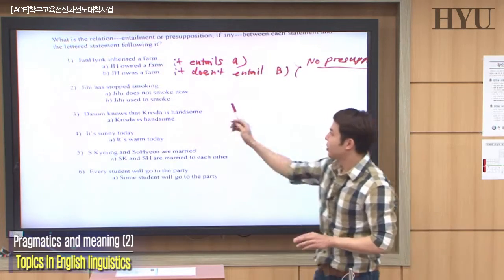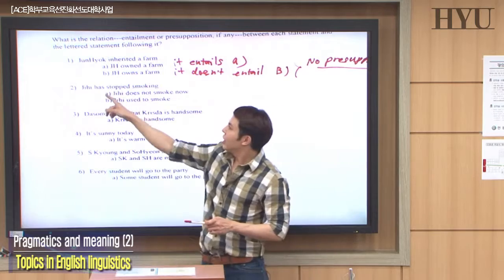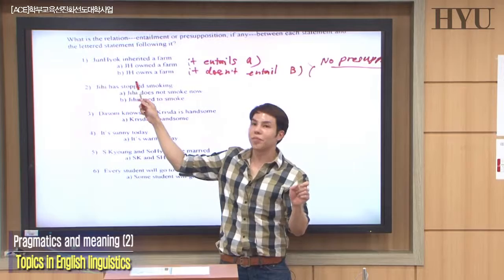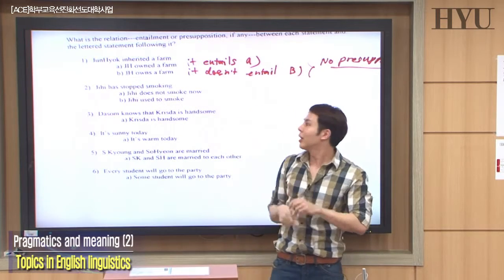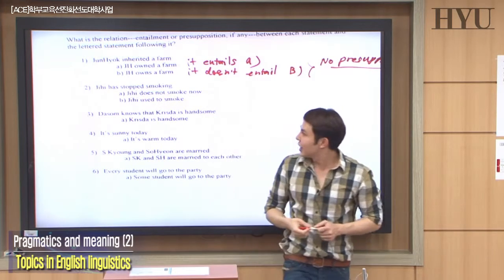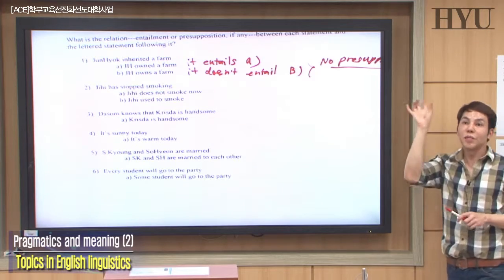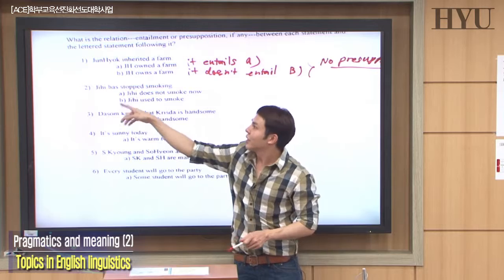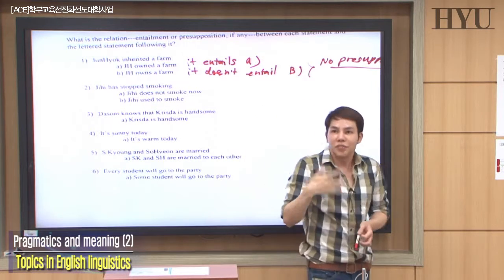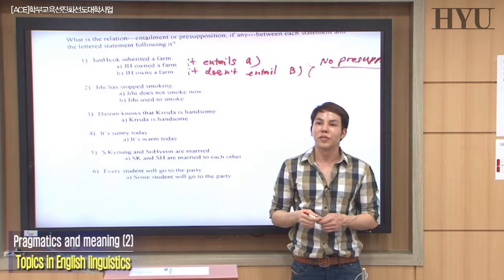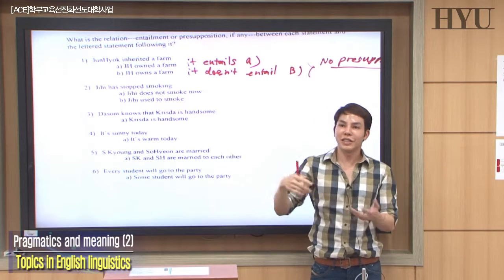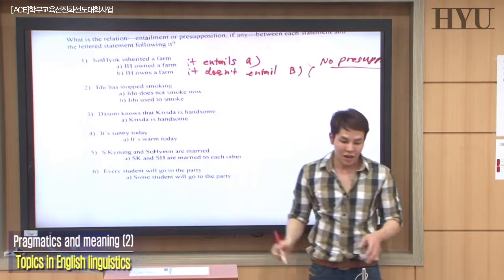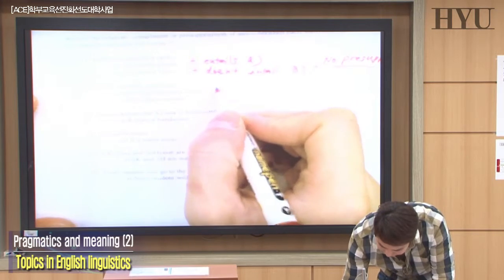Number two and three together. 'Ji Hyuk has stopped smoking.' This is a change-of-state verb. Does it entail that she does not smoke now? Yes — she stopped smoking, so it entails A. Does it entail that Ji Hyuk used to smoke? Yes — so it entails B as well.